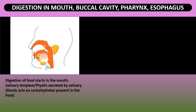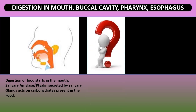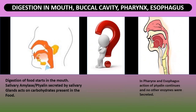Digestion of food starts in the mouth. Salivary amylase, or ptyalin, secreted by salivary glands acts on carbohydrates present in the food and converts them into maltose sugars. In the pharynx and esophagus, the action of ptyalin continues and no other enzymes are secreted. The soft food mixed with saliva passes through the esophagus or food pipe by wave-like movements called peristaltic movement to the stomach.